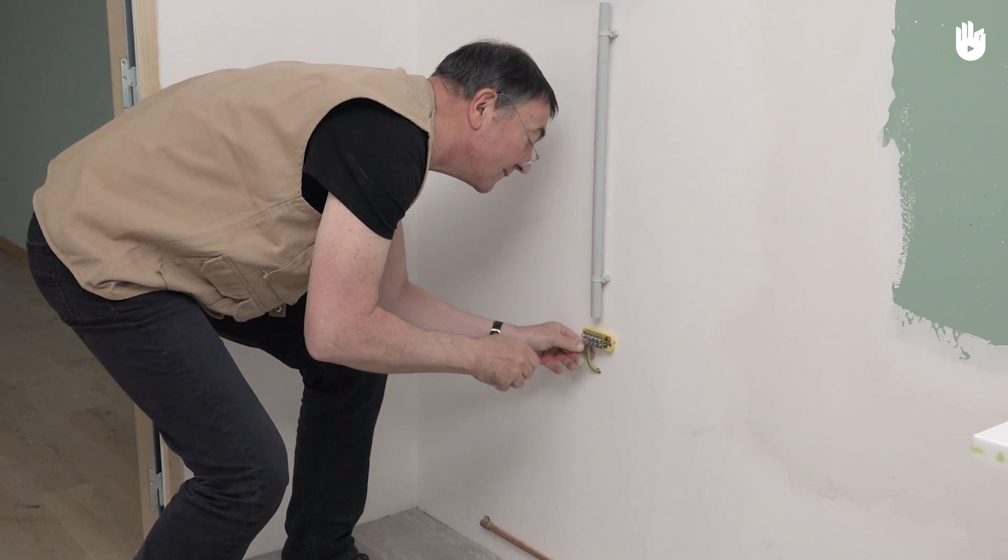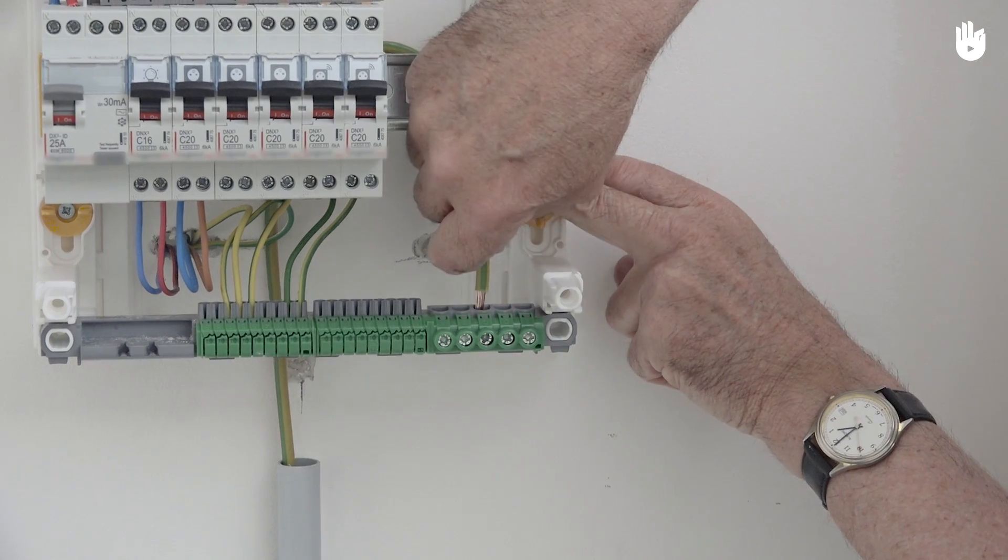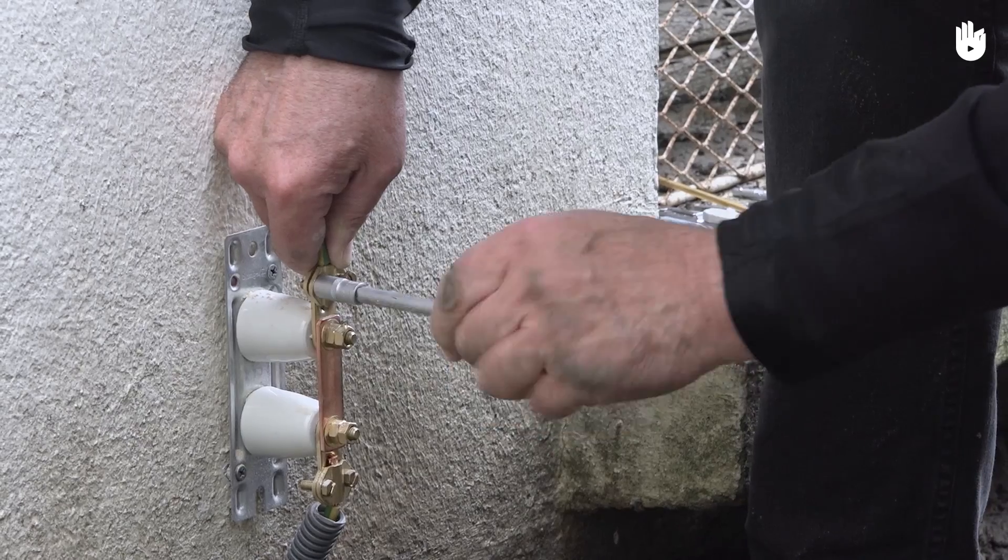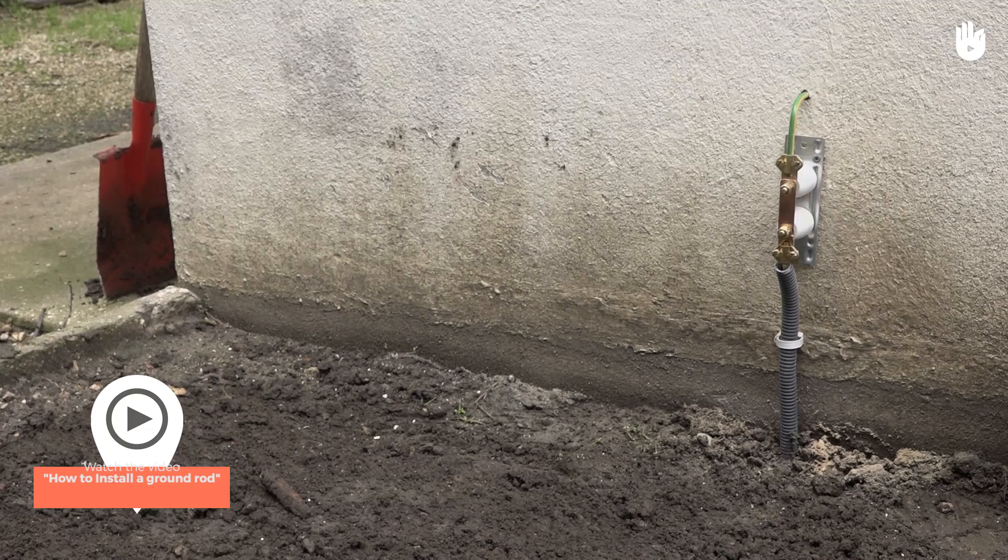This operation is carried out in 3 steps, as we will explain. This operation is done after installing the ground wire. To learn more, please watch the video How to Install a Ground Rod.